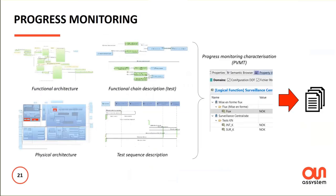A specific need for some projects was a more detailed view of test progress monitoring. To address this, we built diagrams to structure functional and physical architectures, identify the functional chains to be tested, and — depending on the project — elaborate test scenarios with specific sequence diagrams, adding specific values to monitor the progress of verification activities. For example, we used the PVMT add-on — Property Value Management Tool.